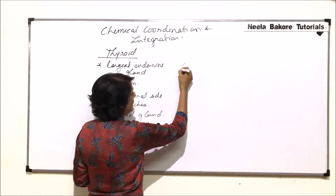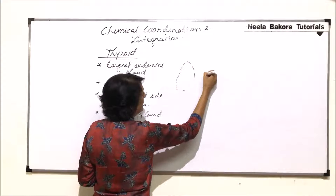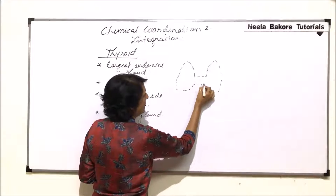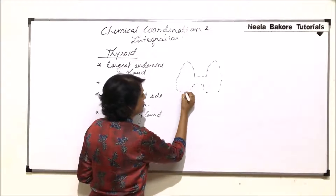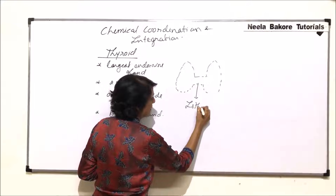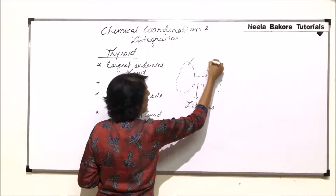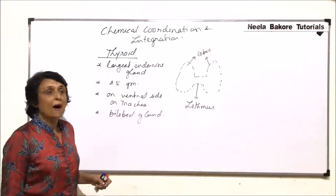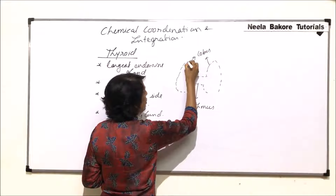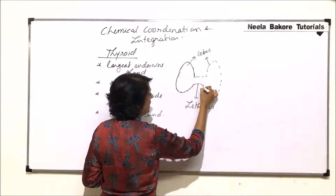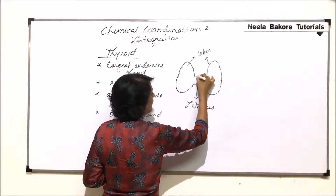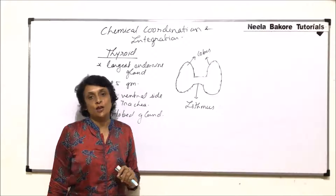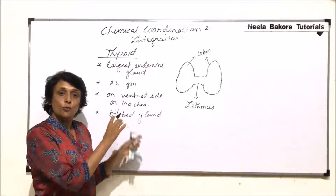If we draw this gland, these are the two lobes — one on each side — and these two lobes are connected by a transverse connection known as the isthmus. These two are the lobes of the thyroid, which is why we call it a bilobed gland. Because of the two lobes connected by this transverse isthmus, the shape of the gland resembles the alphabet H, and it is also known as a butterfly-shaped gland.